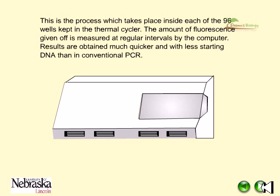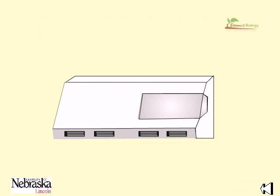This is the process which takes place inside each of the 96 wells kept in the thermal cycler. The amount of fluorescence given off is measured at regular intervals by the computer. Results are obtained much quicker and with less starting DNA than in conventional PCR.